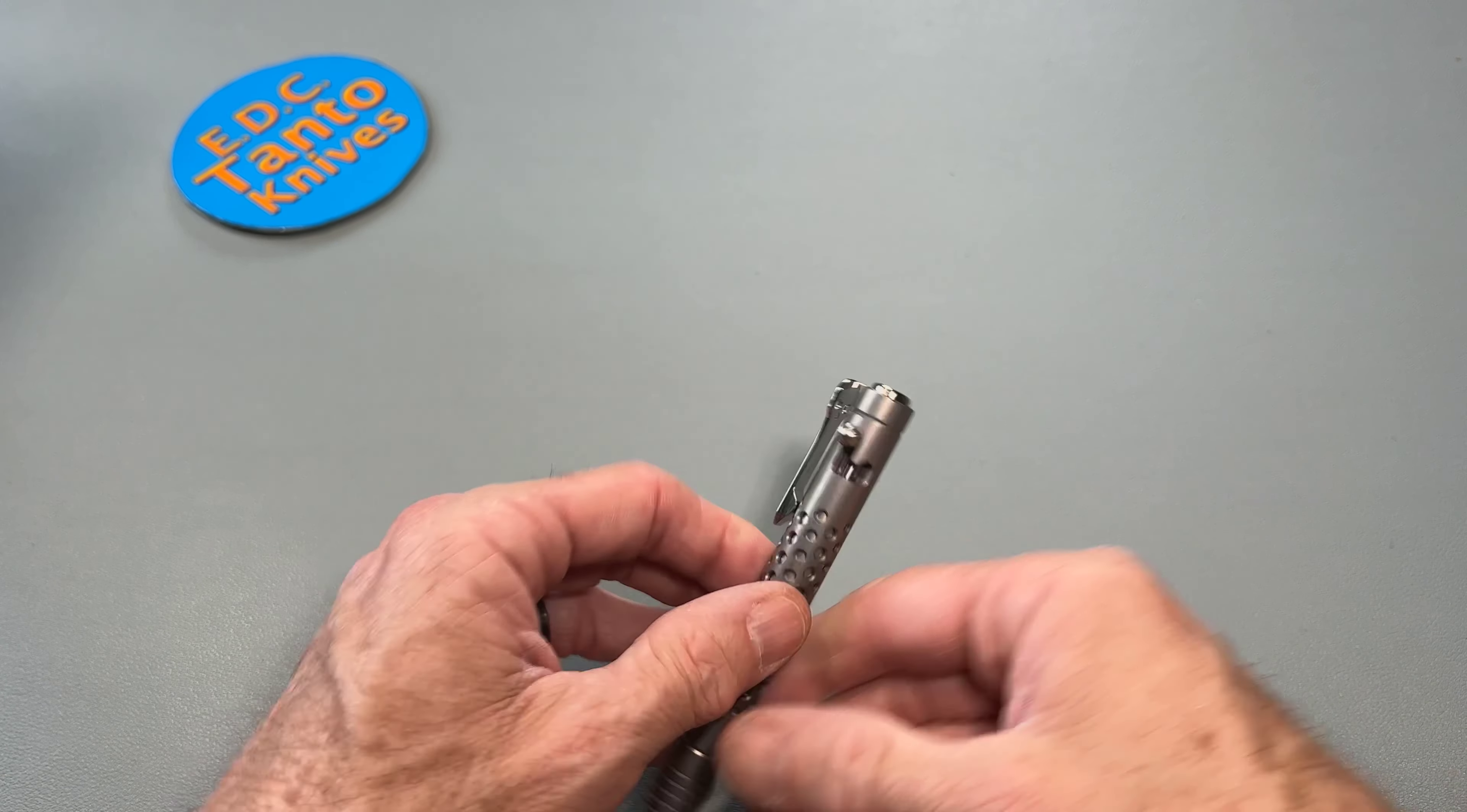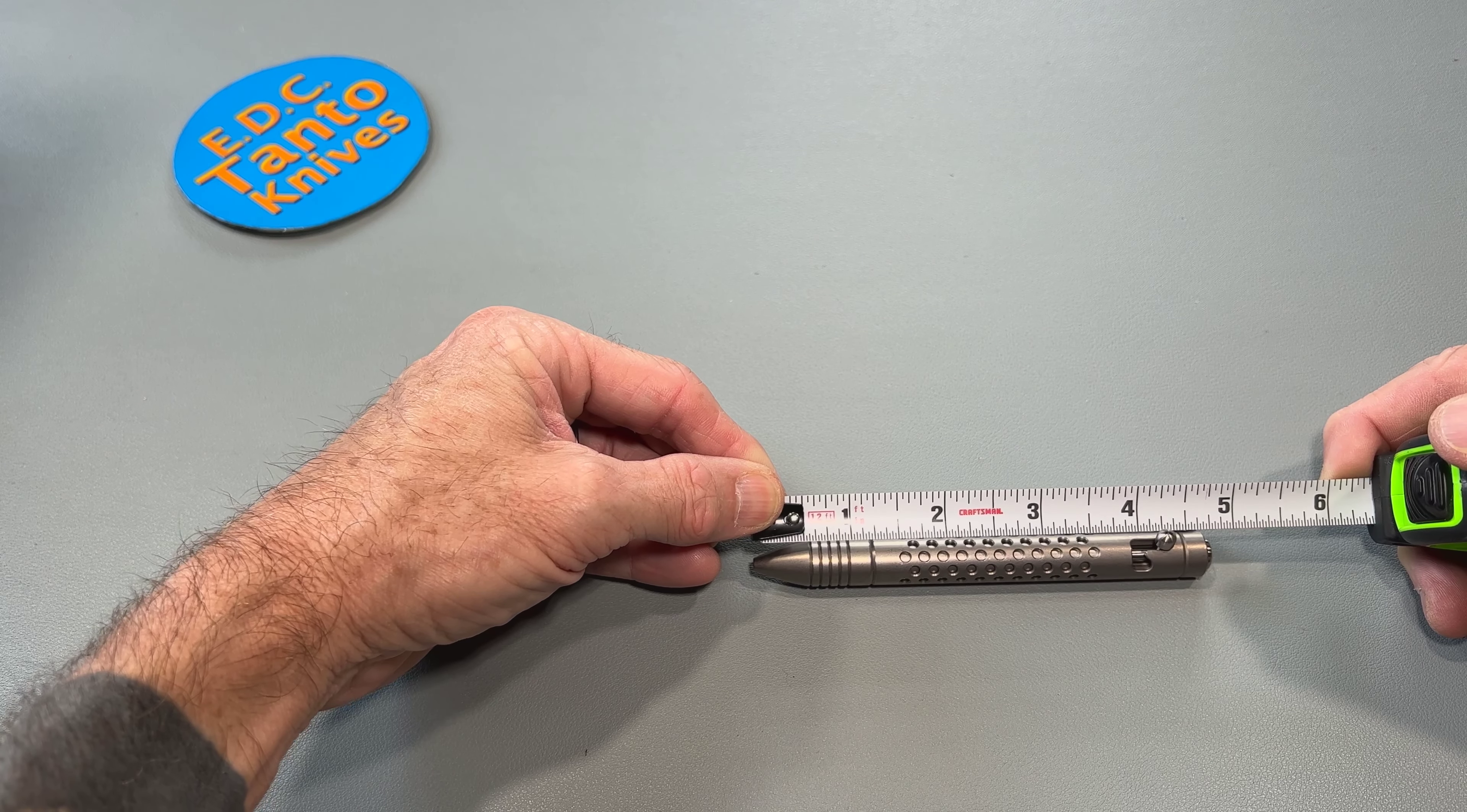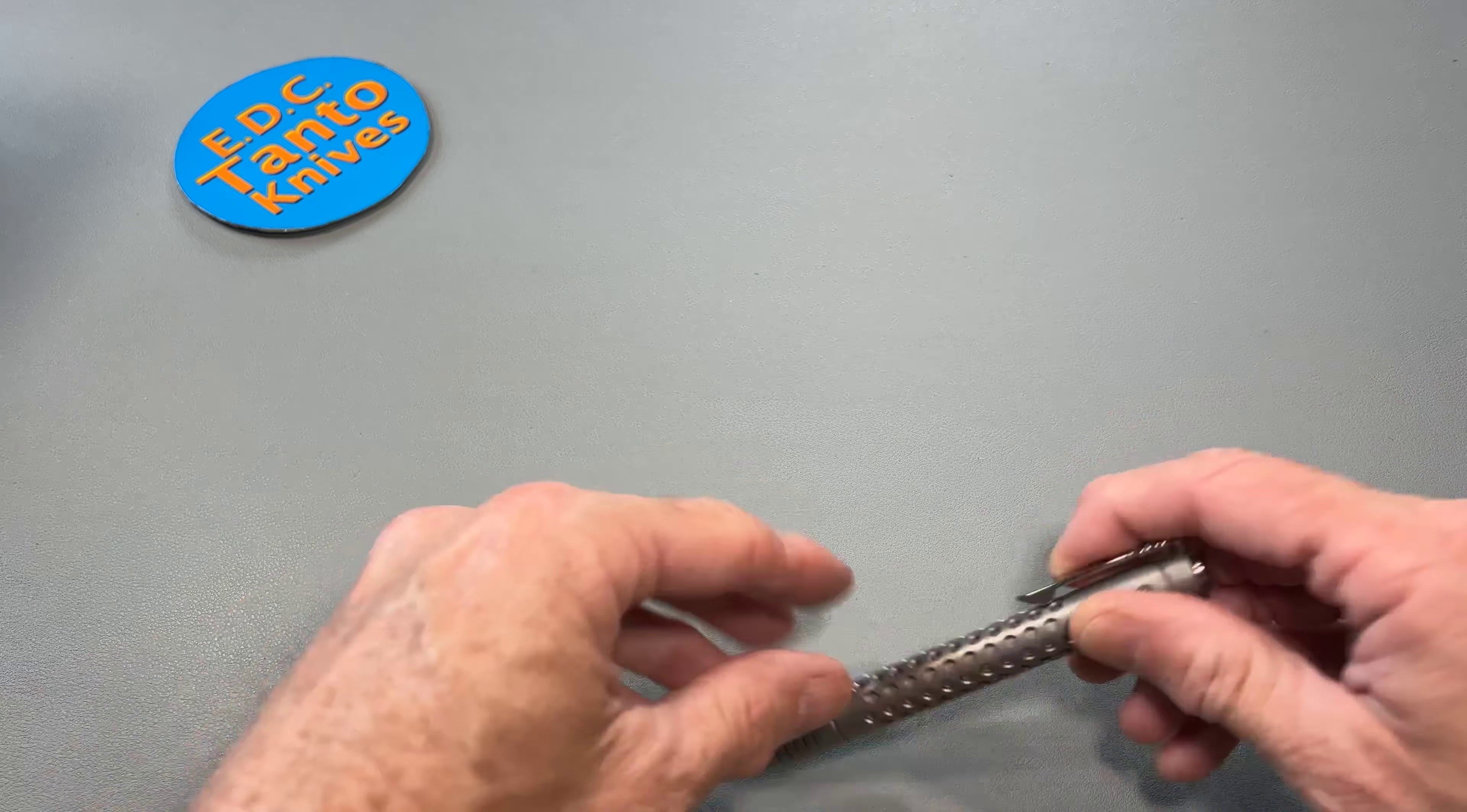Yeah not too bad. Let's just throw a quick measurement out there. About four and three-quarters inches long and about a half inch, which is pretty typical for an EDC pen. About a half inch thick, so very cool, very interesting.